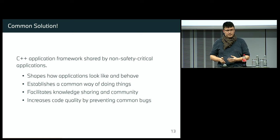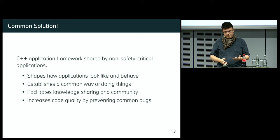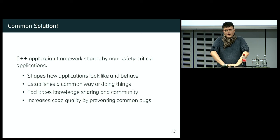Why did we build the application framework? The main reason is that it is in everyone's best interest to solve the problem once, hopefully do it well, and then share the solution within the organization across different teams. The framework defines common abstractions and conventions, and shapes how applications look. Frameworks provide different building blocks and a common language for how to do applications — they establish a common way of doing things. This also builds up a community where teams can cooperate and do great things.